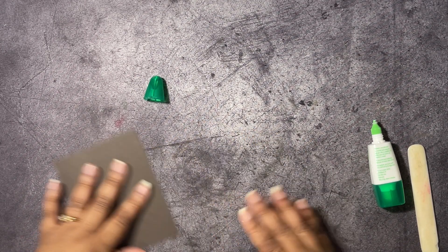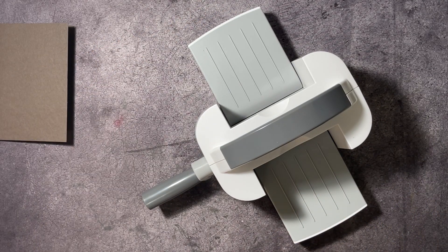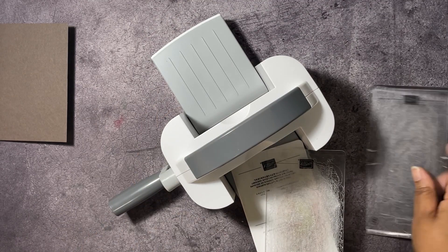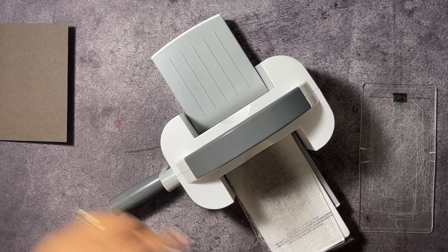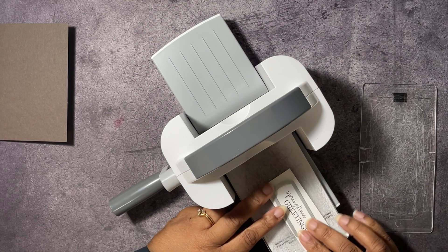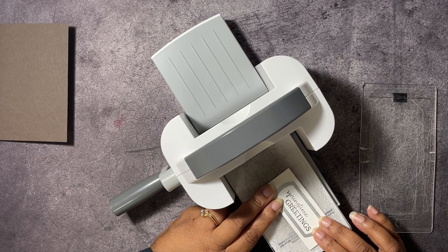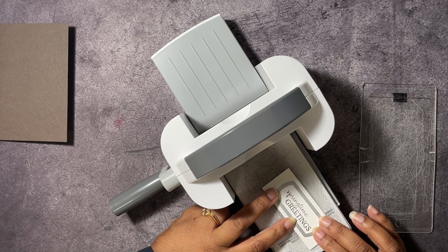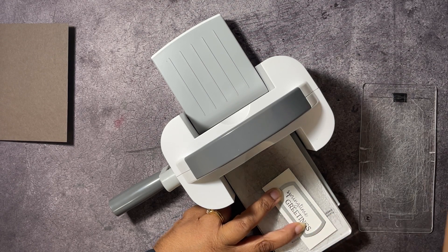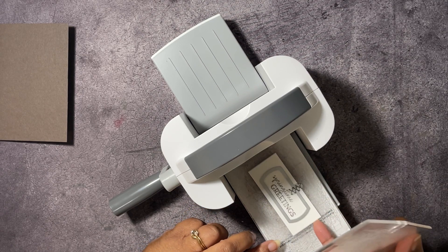Let's go ahead and do some die cutting so we can put this card together. We're going to get out the Baby Boss, the mini stamp and cut and emboss machine. We're going to die cut our sentiment. This is the die that comes in the Love of Spring dies and I want to try to get this on here straight. I'll hold this down with a bit of washi.